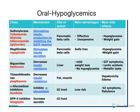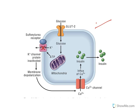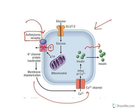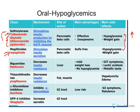Oral hypoglycemics: the first two classes are insulin secretagogues — sulfonylureas and meglitinides. Sulfonylureas have two generations: tolbutamide (first generation); glipizide and glibenclamide are second generation. Meglitinides include repaglinide and nateglinide. Both classes act similarly by increasing insulin release. The potassium channel has a receptor called the sulfonylurea receptor; sulfonylureas and meglitinides bind to this receptor, inhibit the channel, and cause insulin release. Hence they are known as insulin secretagogues, acting on pancreatic beta cells. The side effects are the same — hypoglycemia and weight gain.